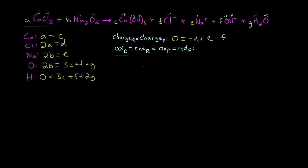Starting with oxidation on the reactant side: cobalt goes from plus two to plus three, that's an oxidation of one. It's in our A molecule and we have one cobalt atom, so one times A times one gives us just A. For reduction on the reactant side: oxygen goes from minus one to minus two, that's a reduction of one. It's in the B molecule and we have two oxygen atoms, so one times B times two gives us 2B.